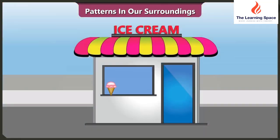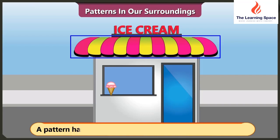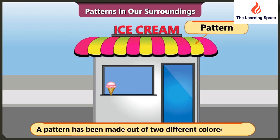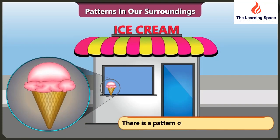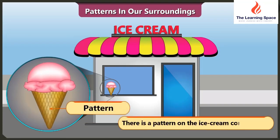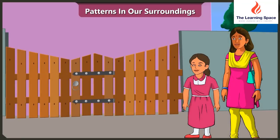Now look at the roof of this ice cream shop. Does it have a pattern? Yes, here two different color stripes have been used to make a pattern. And the ice cream cone also has a pattern. We talked all the way and reached home so soon.